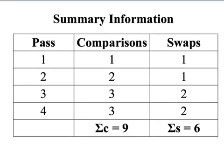When running an algorithm — be it bubble sort or shuttle sort — I'm interested in how many comparisons and swaps were done on each pass. I've tabulated this information here. First pass: one comparison, one swap. Second pass: two comparisons, one swap. Third pass: three comparisons, two swaps. Fourth pass: three comparisons, two swaps. The total number of comparisons was nine and the total number of swaps was six. This type of information is really useful when comparing the efficiency of an algorithm.